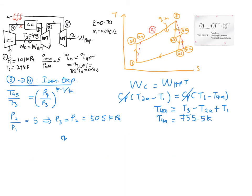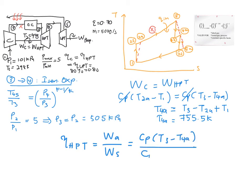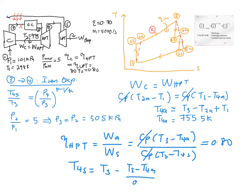Let's solve using the isentropic efficiency of the high pressure turbine, which equals actual work over isentropic work. This gives: (T3 − T4A) / (T3 − T4S) = 0.80. Cancelling CP and rearranging, T4S equals T3 minus (T3 minus T4A) divided by 0.80, which gives T4S equal to 701.1 Kelvin.